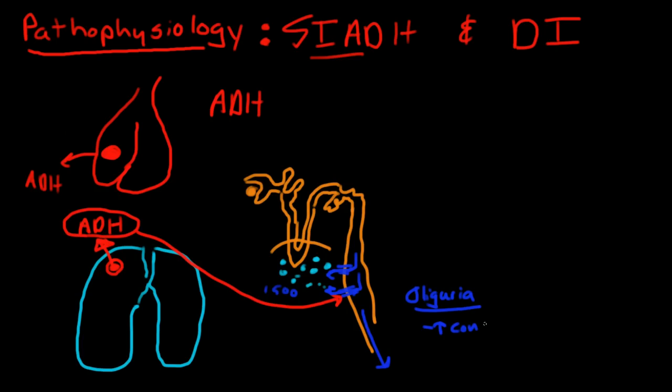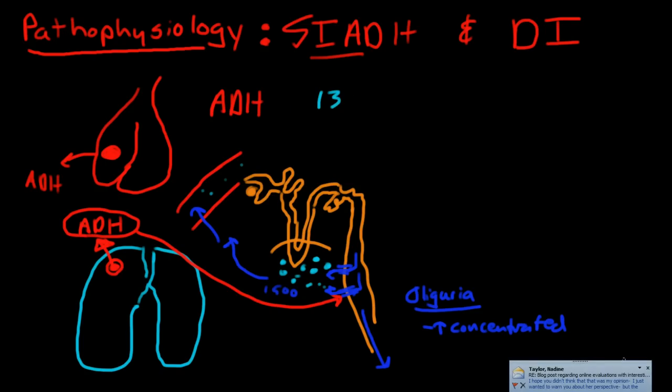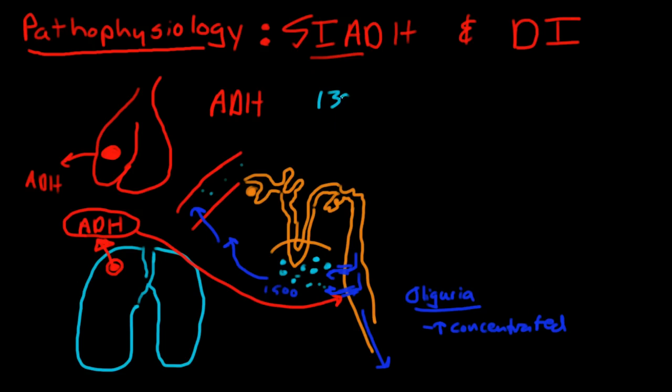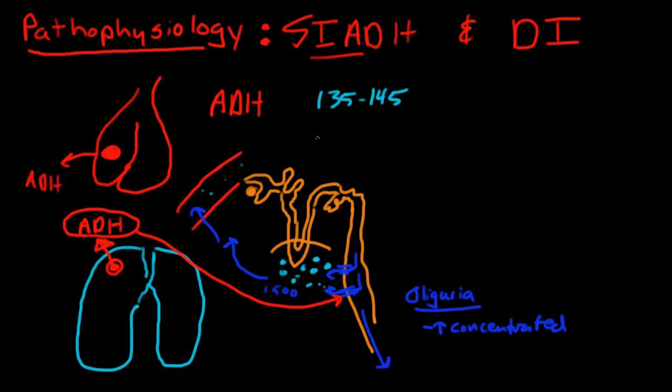But even worse, what happens is the body is preserving too much water. So you end up inside your bloodstream with too much water and too little sodium particles. Normal sodium is between 135 to 145 milliequivalents, and with SIADH the sodium level drops to 125, 120, it can get even lower down to the one teens.